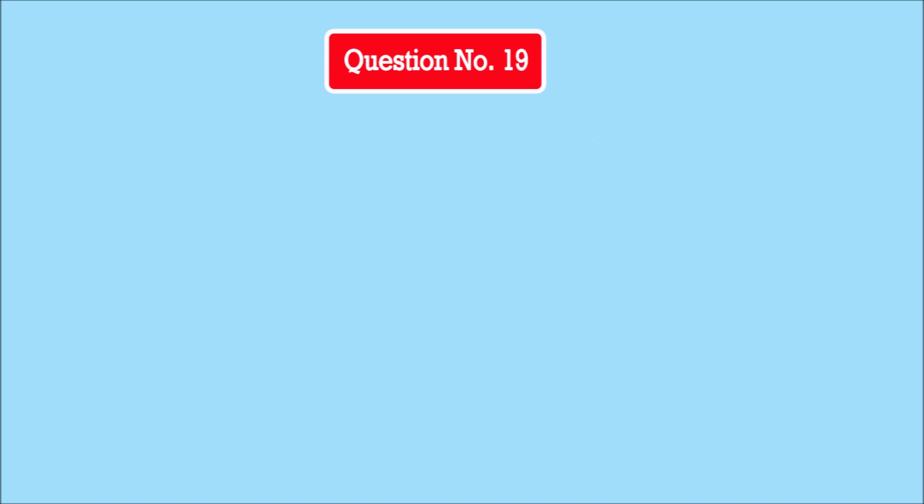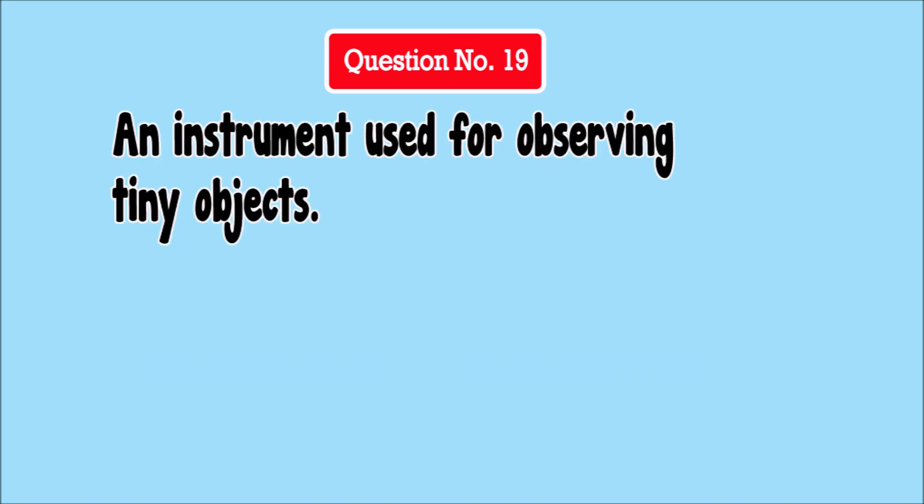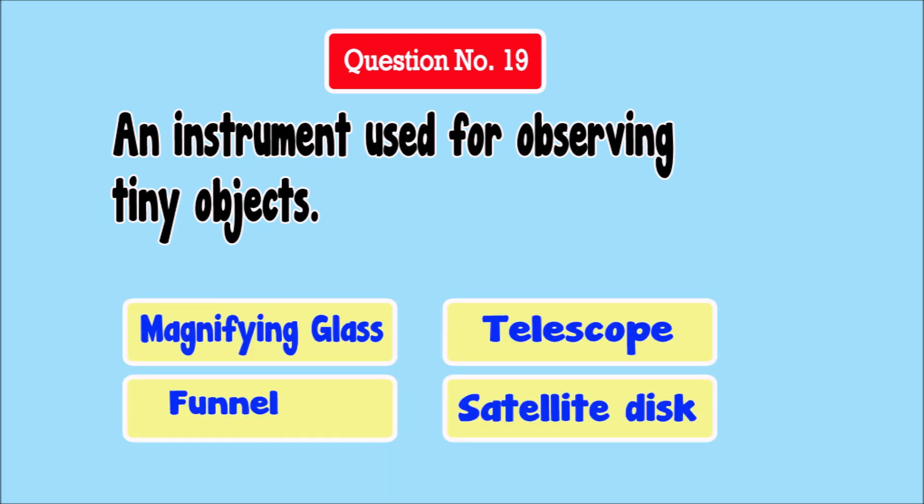Question Number 19. An instrument used for observing tiny objects. Answer choices: Magnifying glass, Telescope, Funnel, Satellite disk.